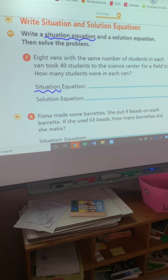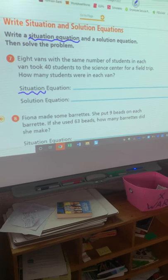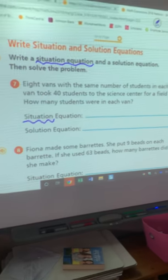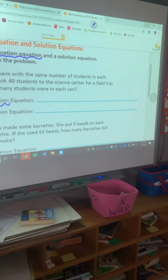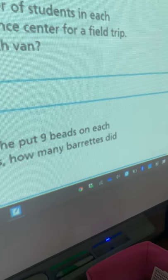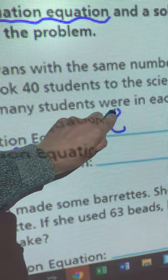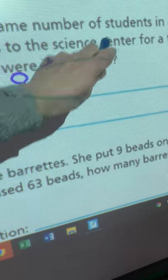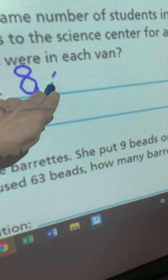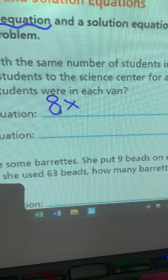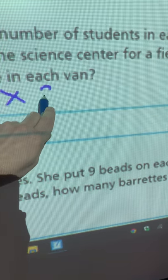And you guys also know that when we're counting by the same number, a lot of times that is a multiplication question or a division question because we're doing our skip counting. Counting by multiples of that number. So we have eight vans. I'm going to put my situation equation up here. Eight vans with the same number of students.